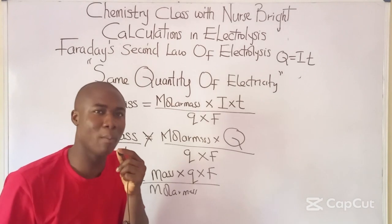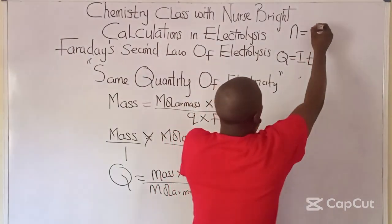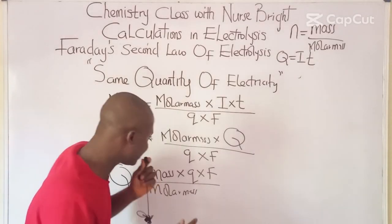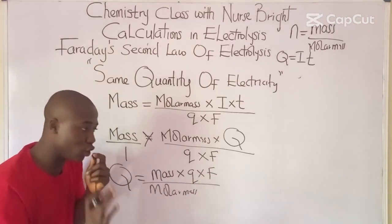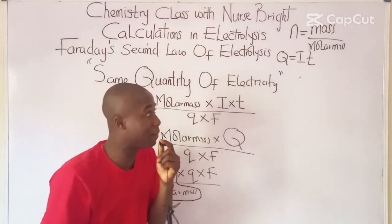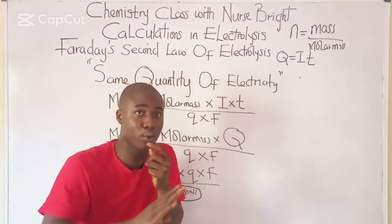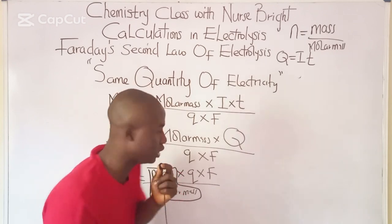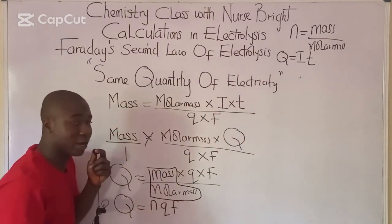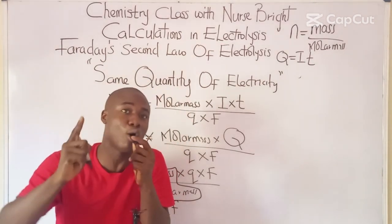Since number of moles N = mass / molar mass (from the mole concept), we can substitute to get Q = N × q × F. This is the expression for quantity of electricity. A link to the mole concept and stoichiometry video will be provided. Replacing mass/molar mass with N gives Q = NqF.